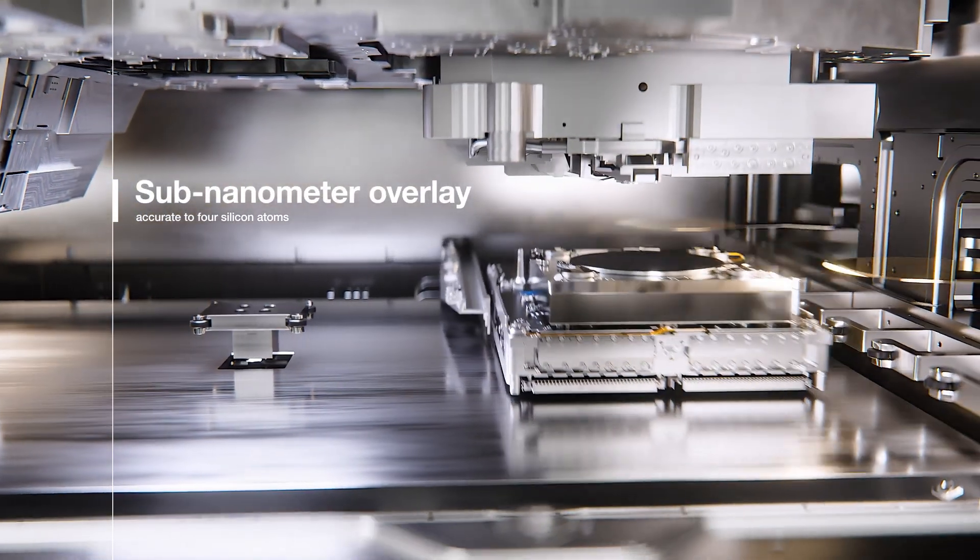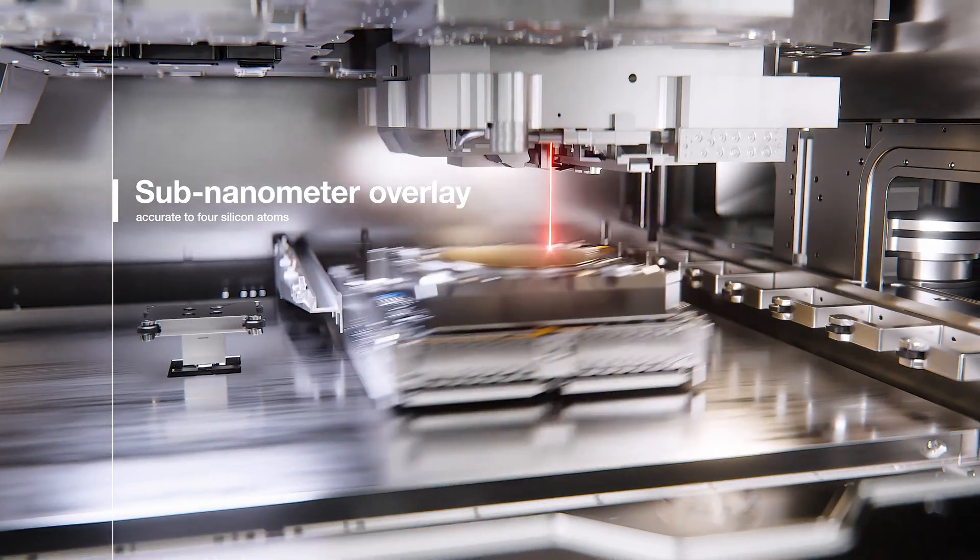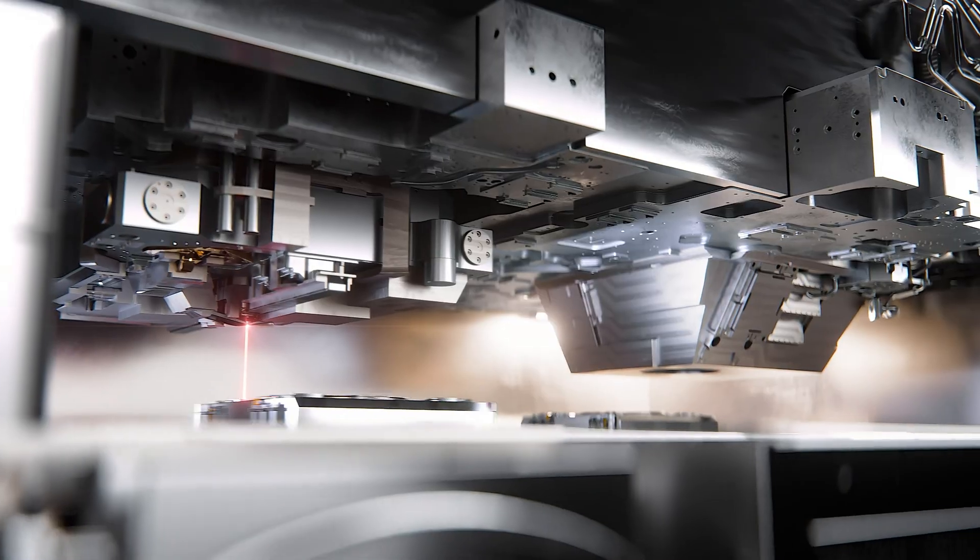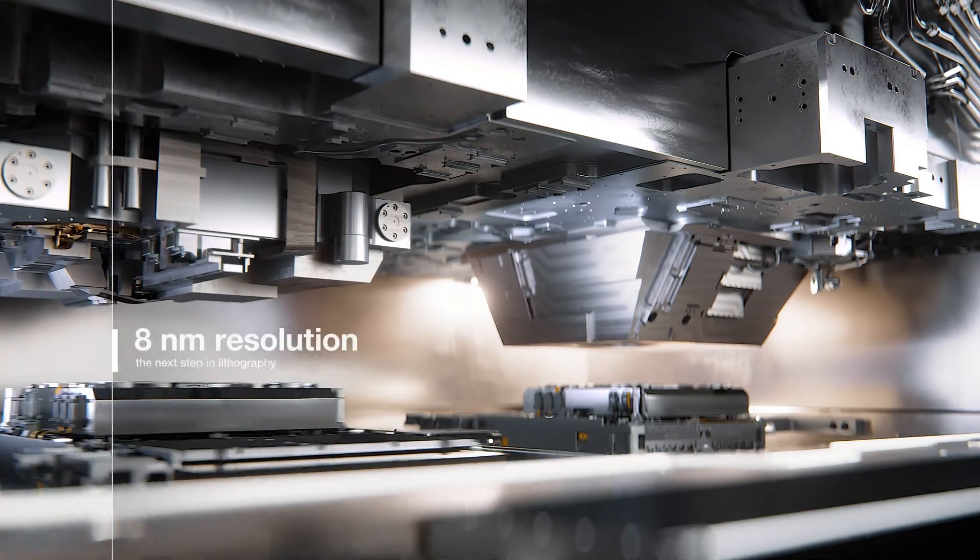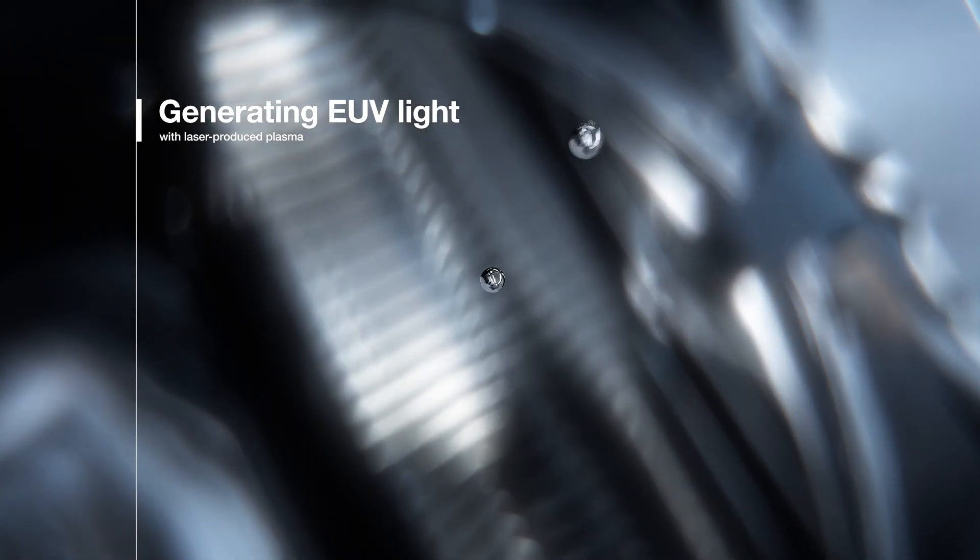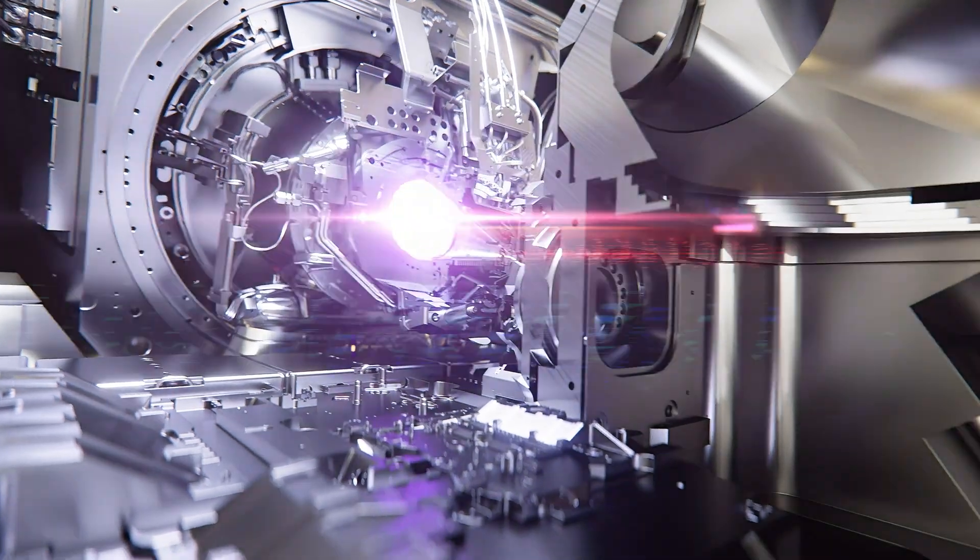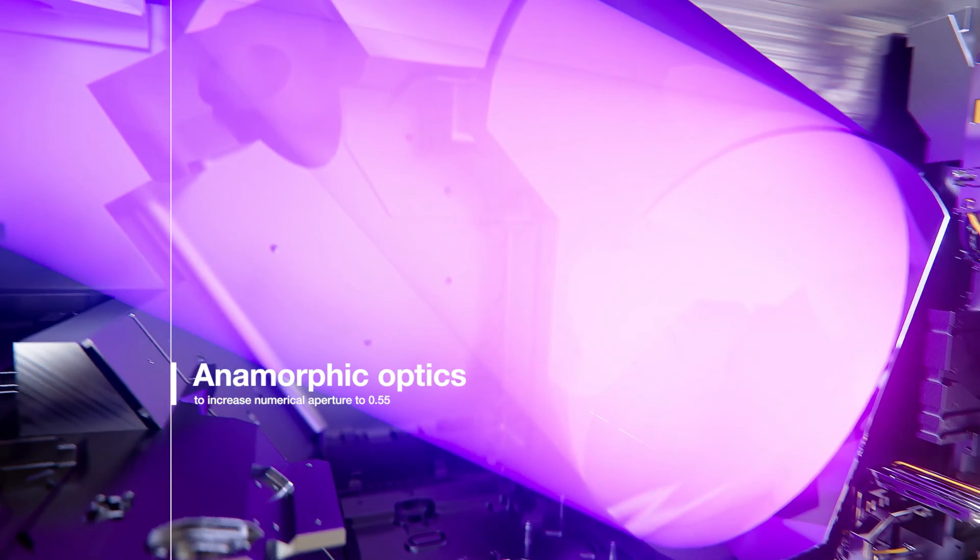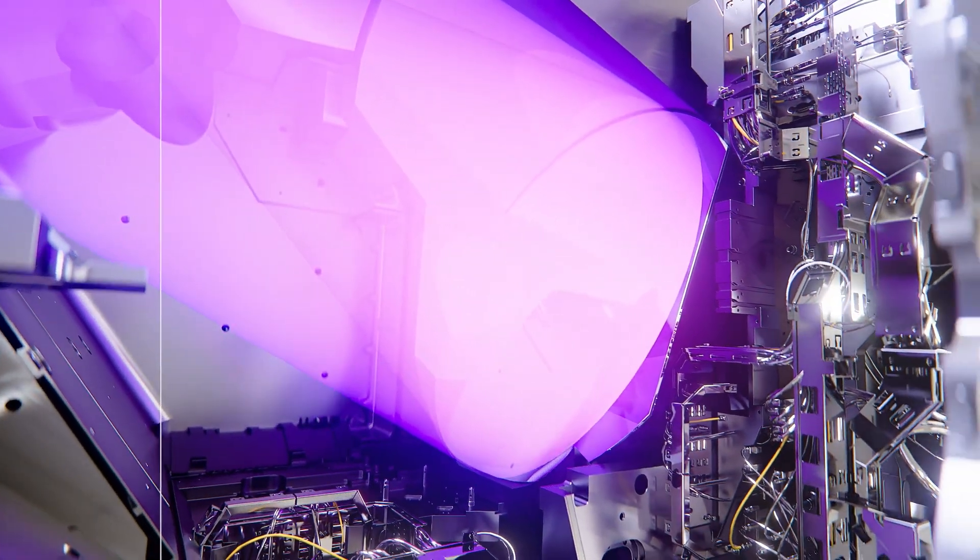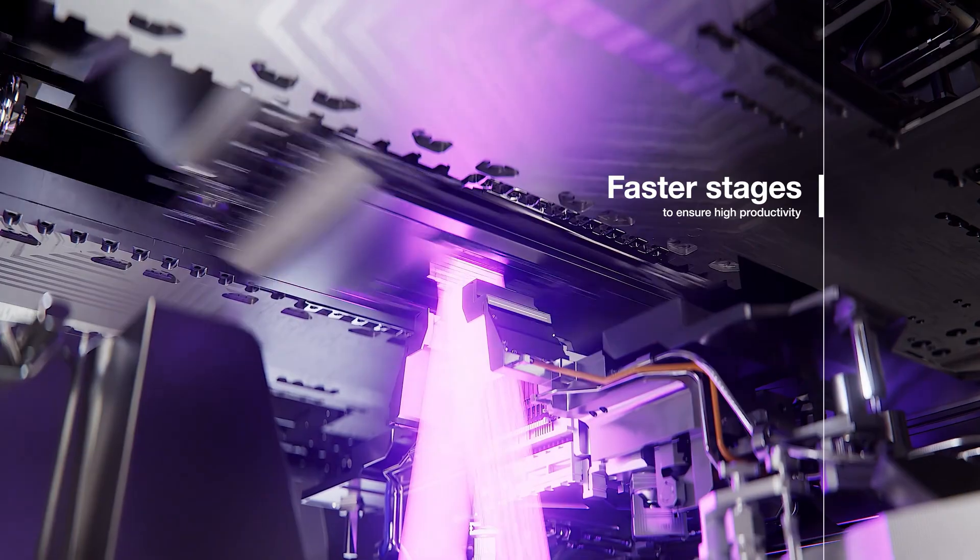The most insane part, though, is how ASML actually makes the 13.5 nanometer light. See, it turns out that if you happen to explode a drop of molten tin with an extremely powerful laser, the resulting explosion happens to release 13.5 nanometer wavelength photons. Science, man. It's like barbaric magic sometimes.